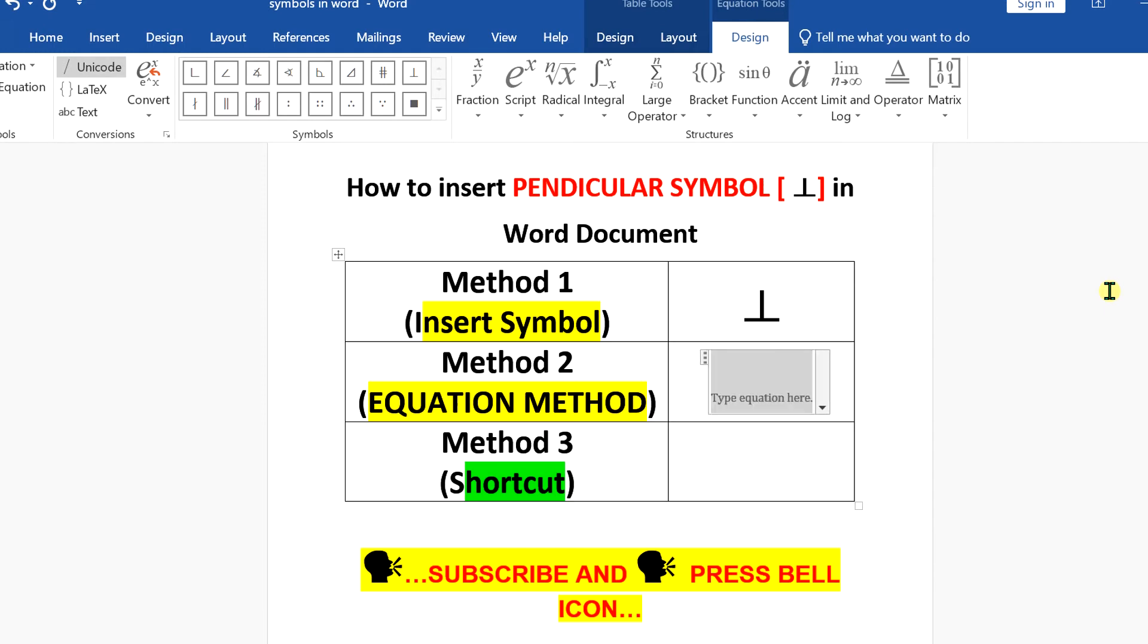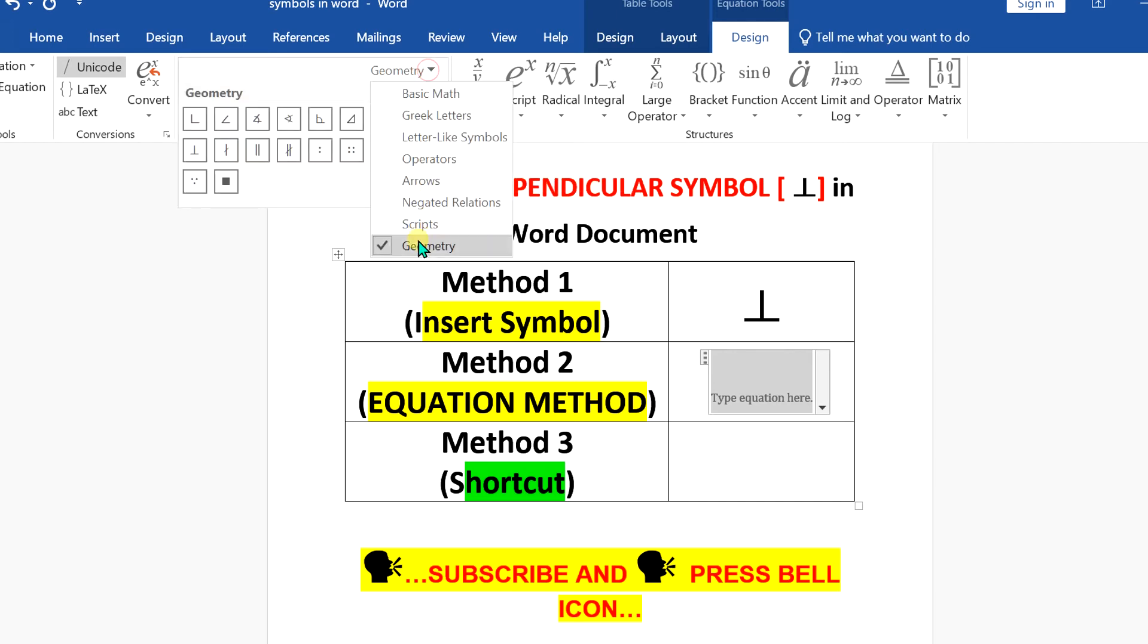There is one more command. You can also use bot to insert the perpendicular symbol. You can also use the options here: click on More, select Geometry, and you will see the perpendicular option.